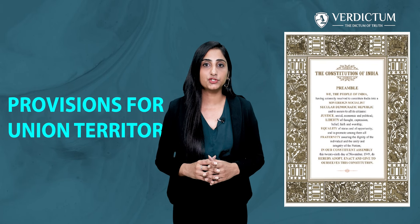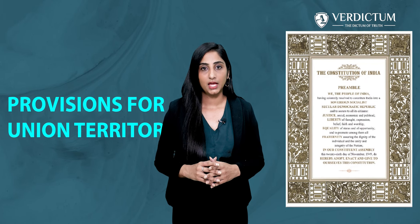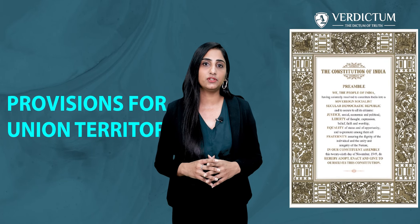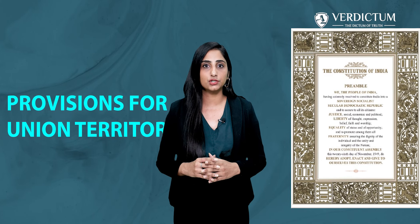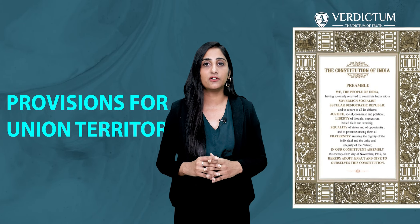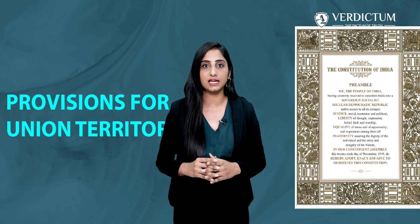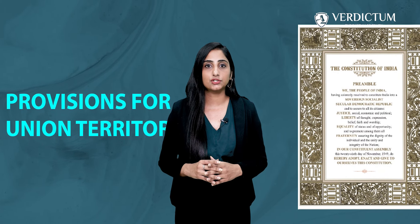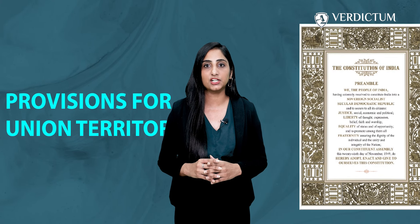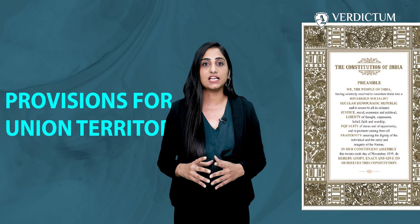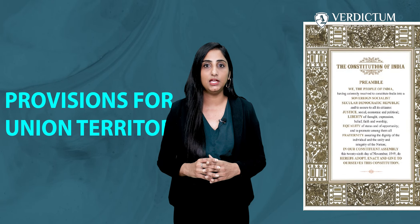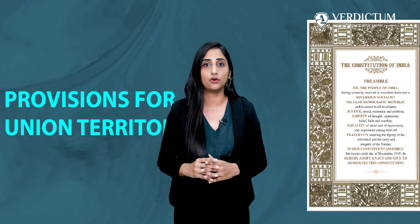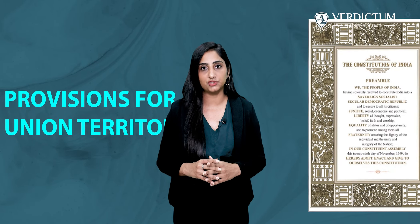3. Provisions for Union Territories. In tune with the amendments to Articles 83-2 and 172, similar changes will be needed in Section 5 (Duration of Legislative Assembly) of the Government of National Capital Territory of Delhi Act 1991 for the Legislative Assembly of Delhi; Section 17 (Duration of Legislative Assembly) of the Jammu and Kashmir Reorganisation Act 2019; and Section 5 (Duration of Legislative Assembly) of the Government of Union Territories Act 1963 for the Legislative Assembly of Pondicherry, the panel report has suggested.